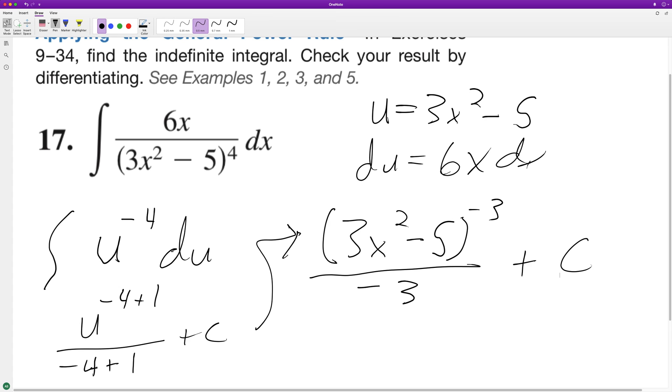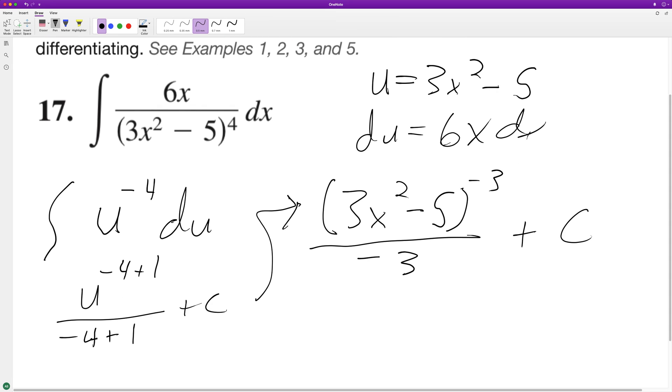We could write this as 1 over negative 3 quantity 3x squared minus 5 raised to the 3, but we'll leave it like that. Then what we'll do here is we can take the derivative to double check and make sure this is correct. So pull down the negative 3—negative 3 on the bottom cancels out.